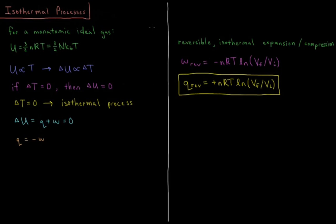If the system expands and does work on the surroundings, we need to add in some heat to give the energy back so that the process remains isothermal and the temperature doesn't change. If the gas gets compressed and work is done on it, then we need to release some heat to the surroundings to make sure that the gas doesn't increase its temperature or internal energy. So the heat during the reversible isothermal expansion or compression is Q = nRT ln(V_final / V_initial).